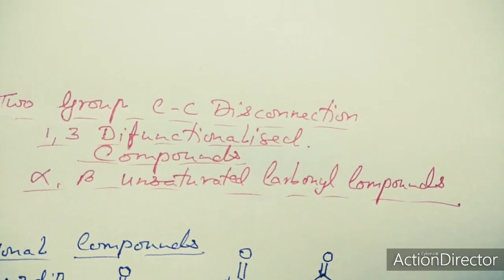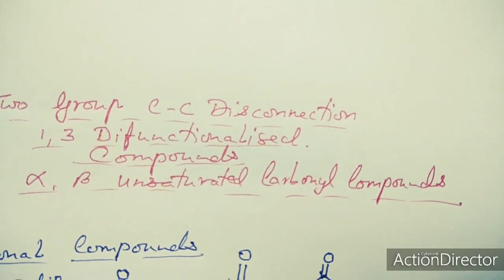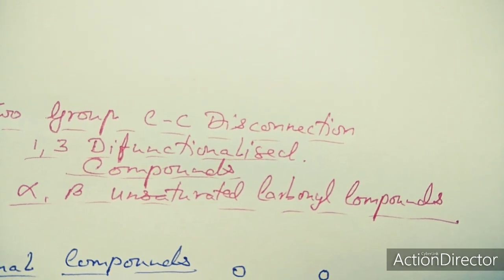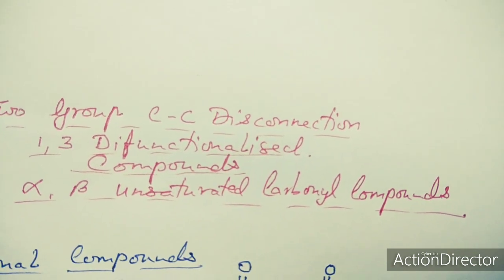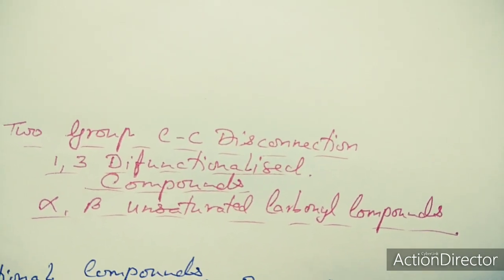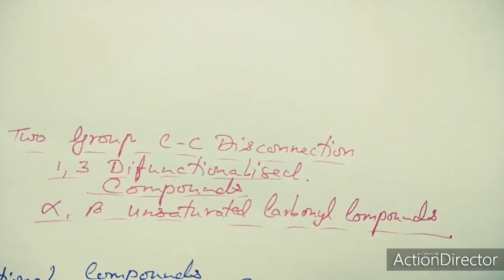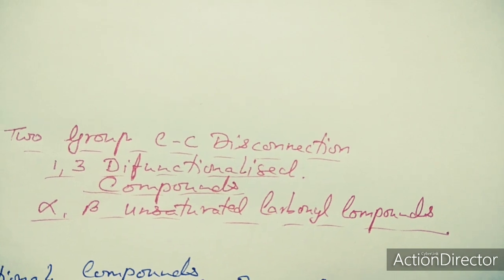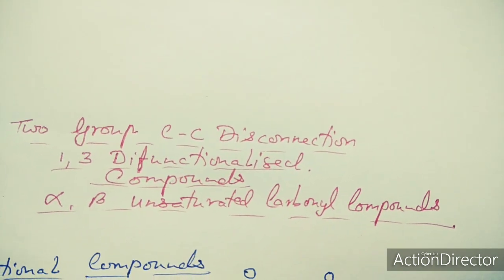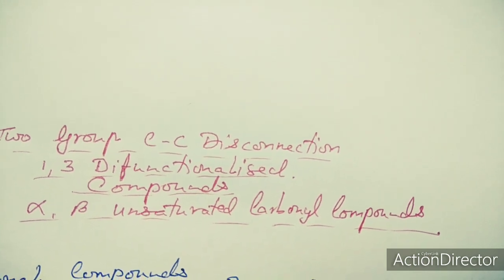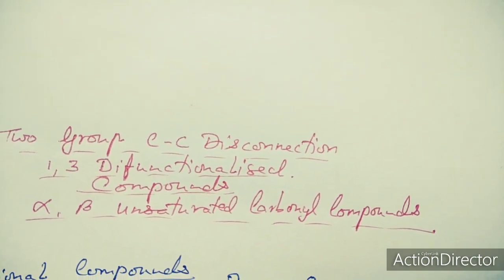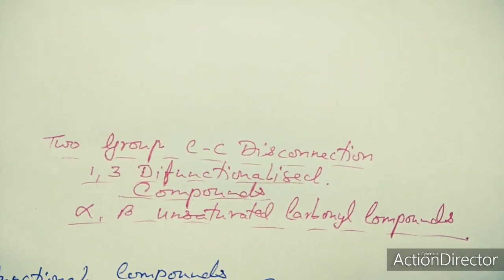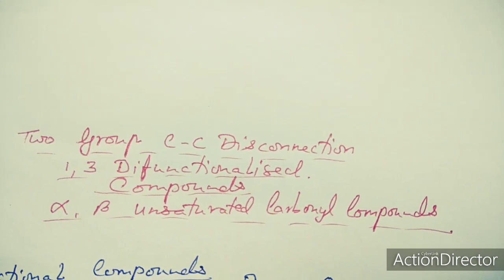Dear students, welcome to this class on carbon-carbon two-group disconnection. In this, we will be taking up the 1,3-difunctionalized compounds and also the alpha-beta unsaturated carbonyl compounds, because they too have this type of two-group C-C disconnection. In other words, we are disconnecting a bond between two carbons, taking into account the presence of two functional groups at the first and third position relative to each other.